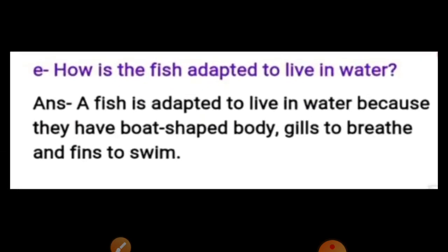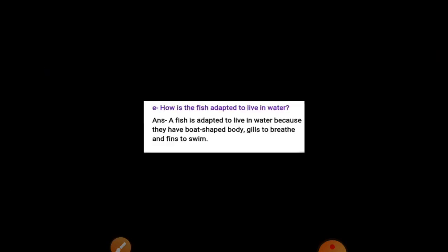Question E: How is a fish adapted to live in water? A fish is adapted to live in water because they have a boat-shaped body, gills to breathe, and fins to swim.